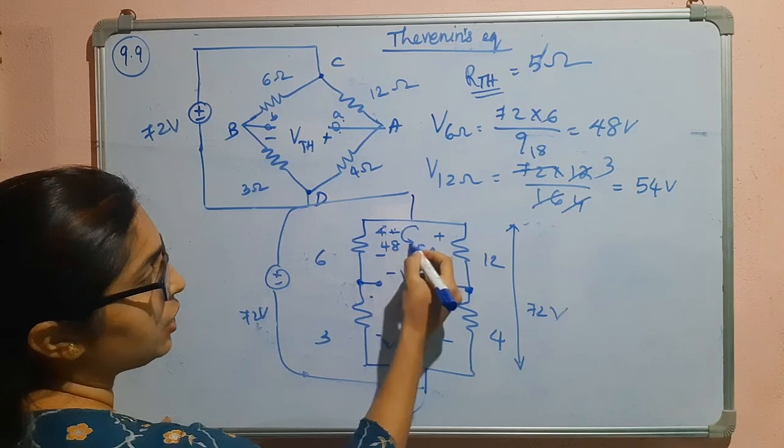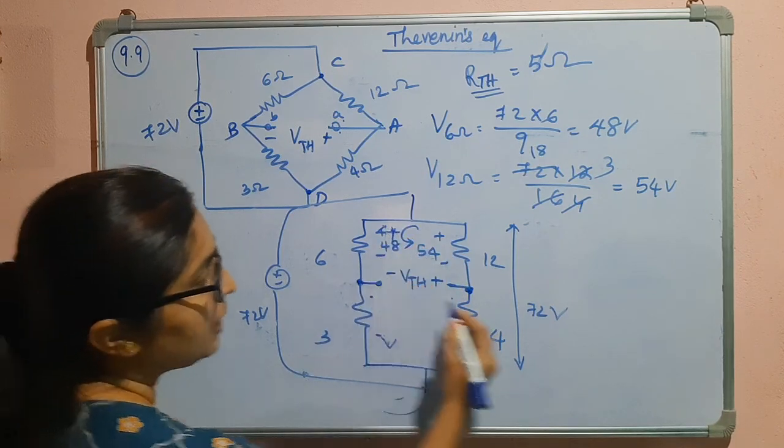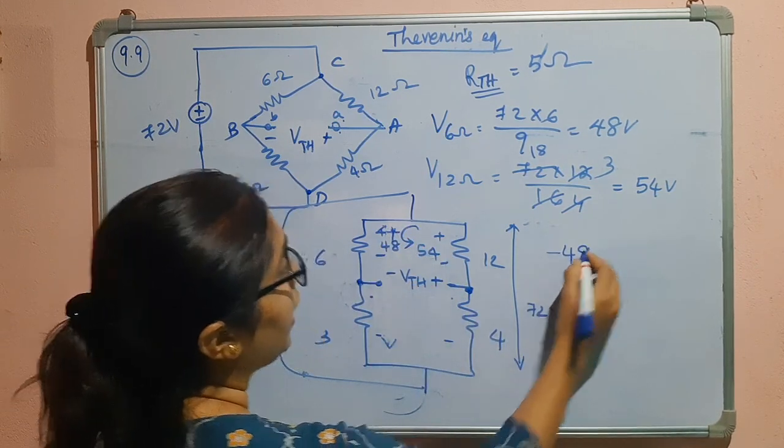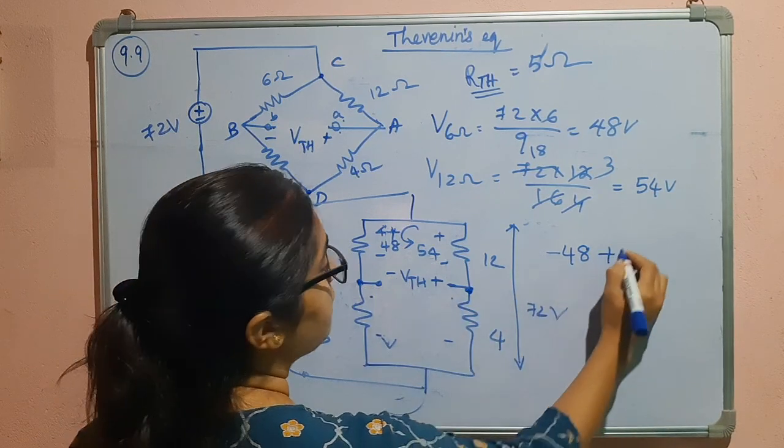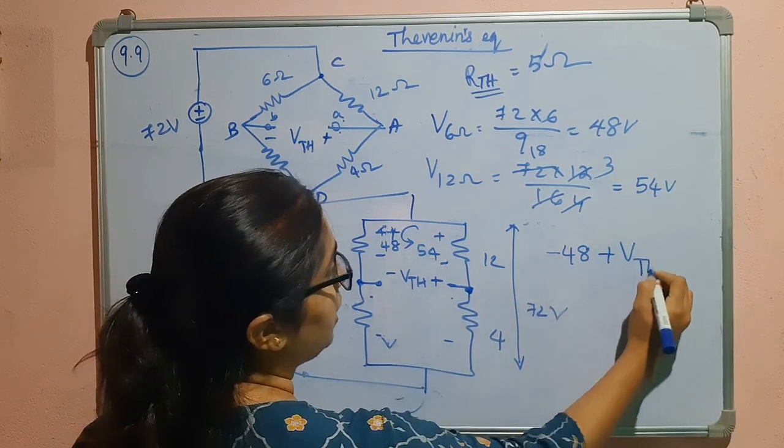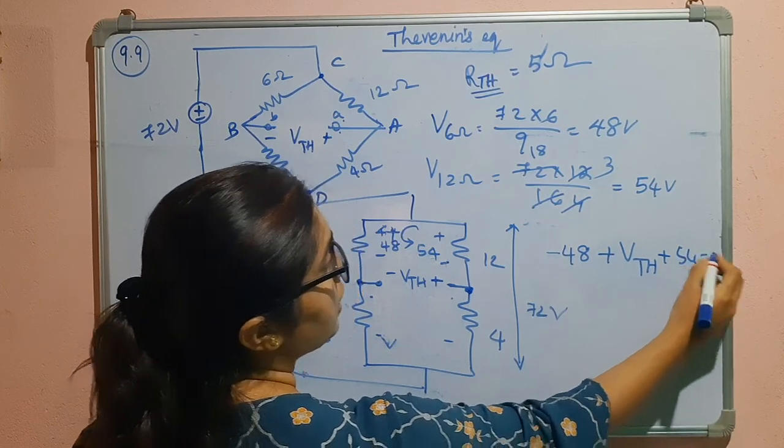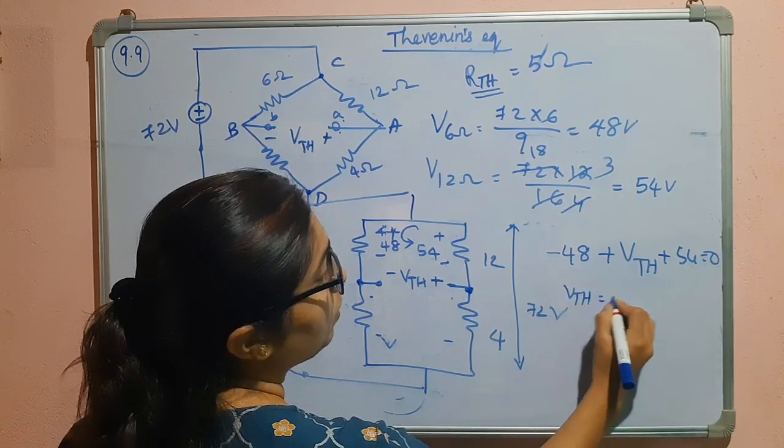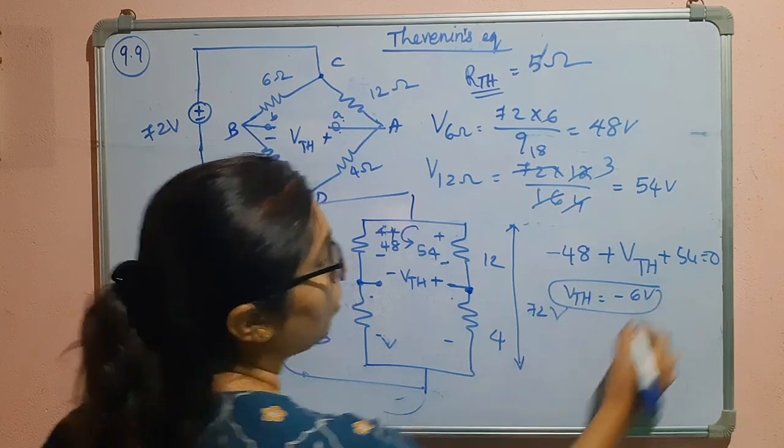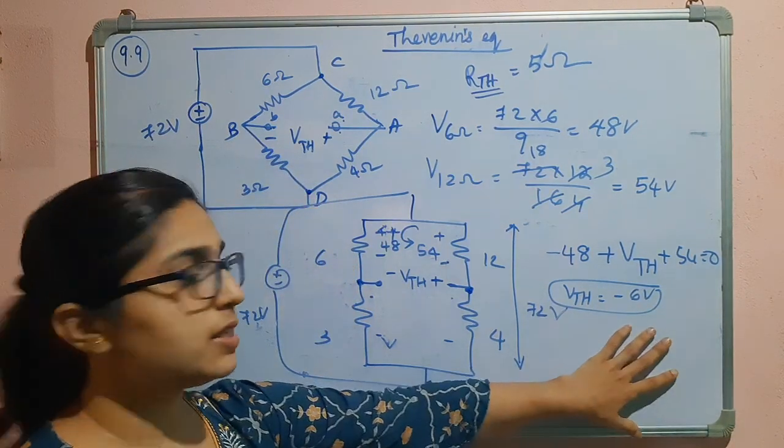Since I am getting plus first I am taking it as minus 48. Since I am getting minus first I am taking plus VTH. Minus first so plus 54 equal to 0. VTH is equal to minus 6 volts.